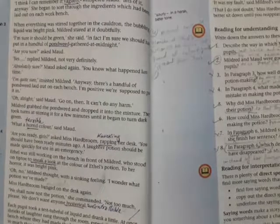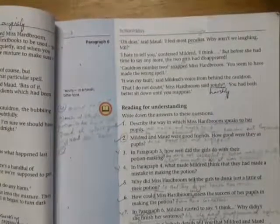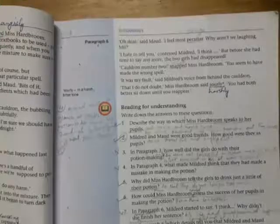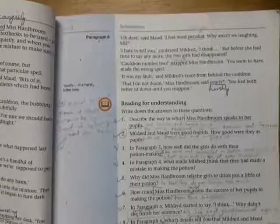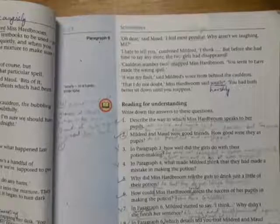Now again come to the text. Each pupil took a test tube full of liquid and drank a little. At once, shrieks of laughter rang through the room, especially from Ethel's bench where they had made the best potion of all and were laughing so much that tears rolled down their cheeks. The only two girls who weren't laughing were Mildred and Maud. 'Oh dear,' said Maud, 'I feel most peculiar. Why aren't we laughing, Mil?' 'I hate to tell you,' confessed Mildred, 'I think...' But before she had time to say any more, the two girls had disappeared.